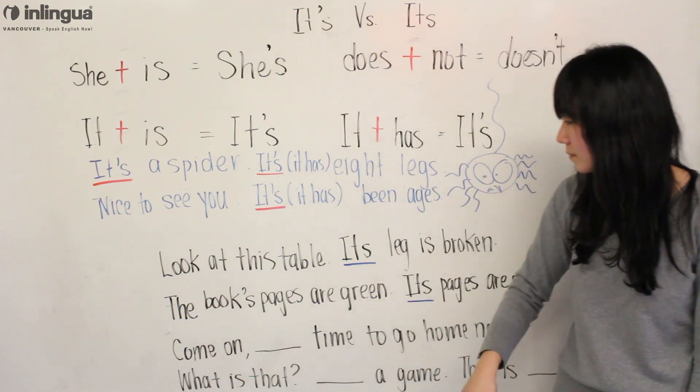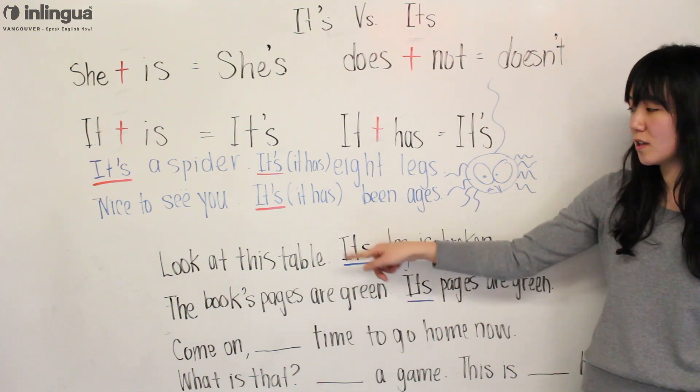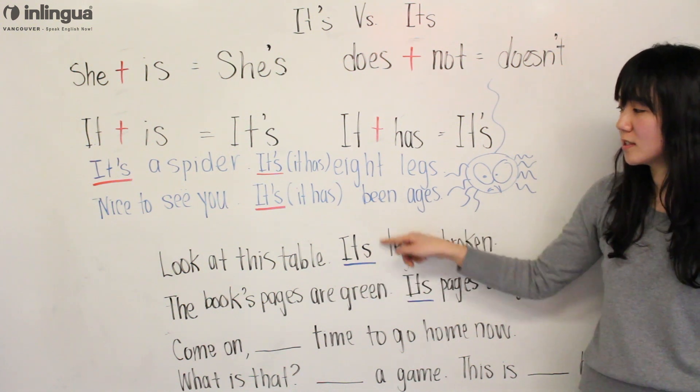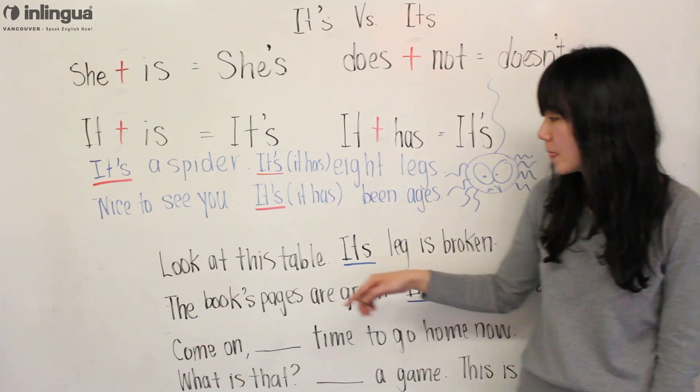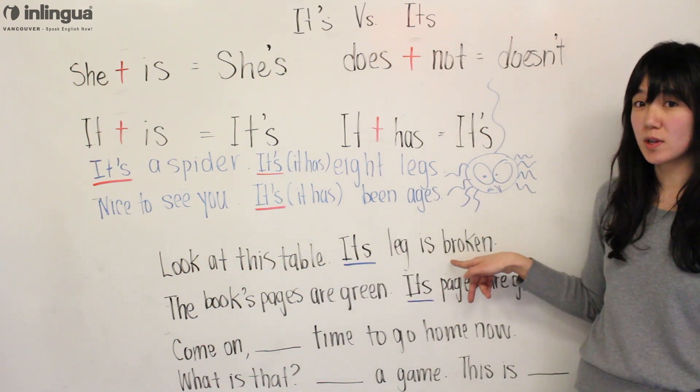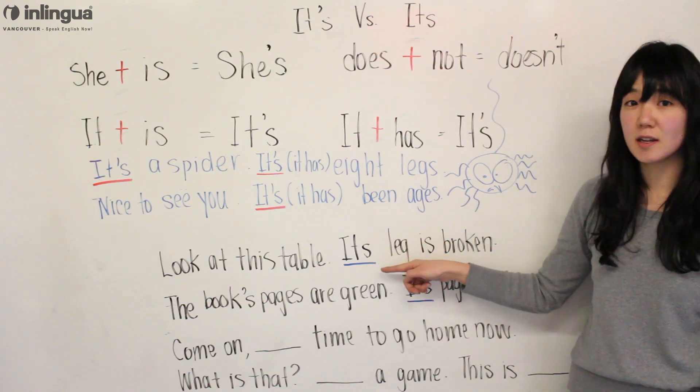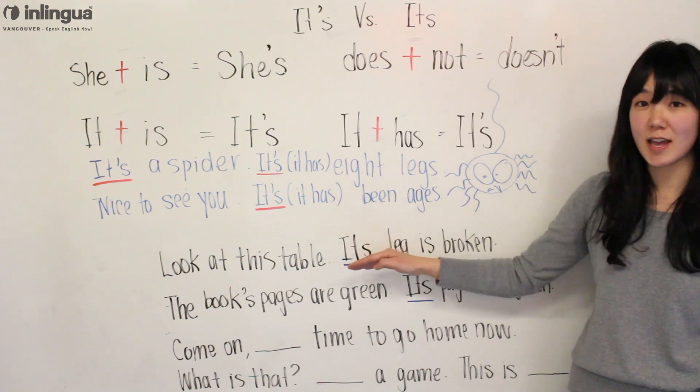But if you look at here, ITS—there is no apostrophe. This means possession. So look at this table. ITS leg is broken, not IT IS leg is broken. ITS leg meaning the table's leg.